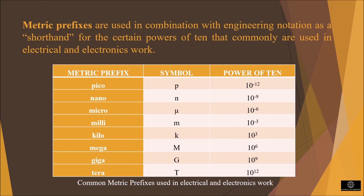Some metric prefixes and their symbols are shown here. For 10³, it is kilo with symbol k. For 10⁻³, it is milli with symbol m. Similarly, many more are given here.